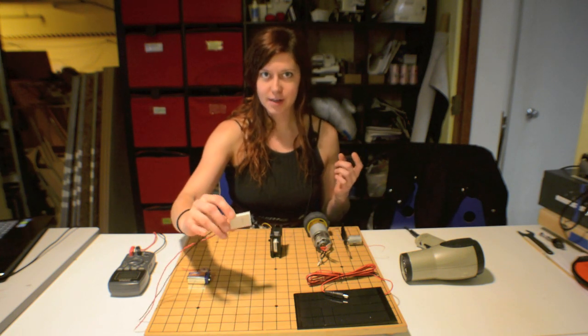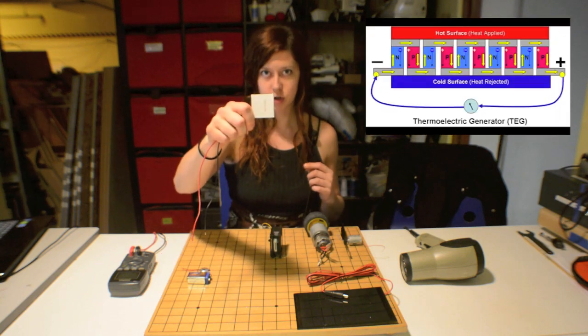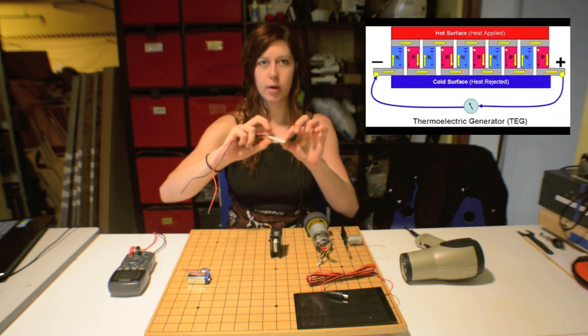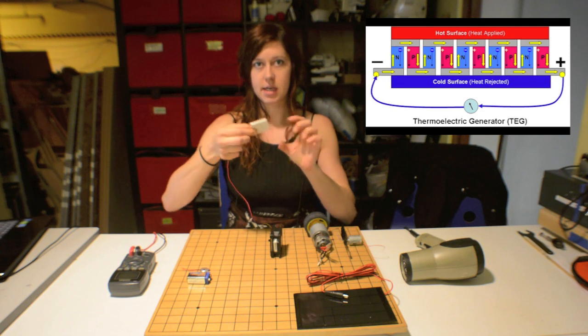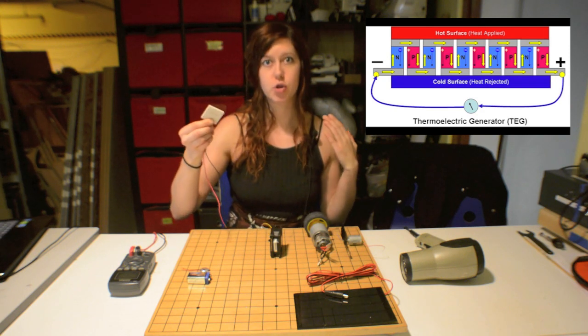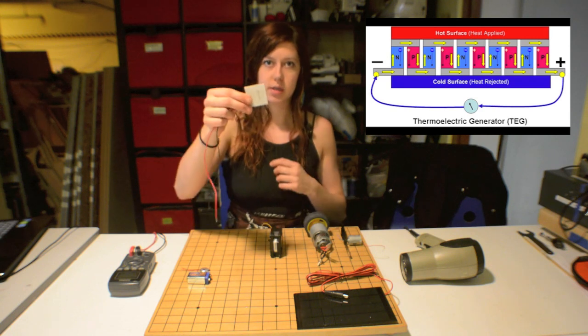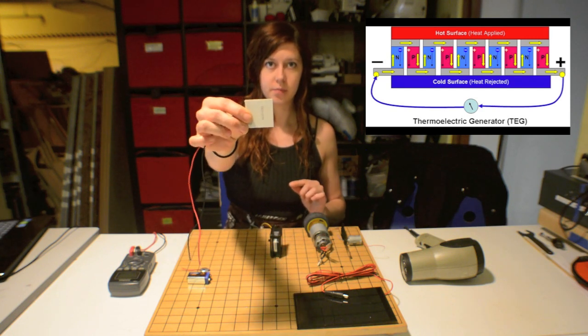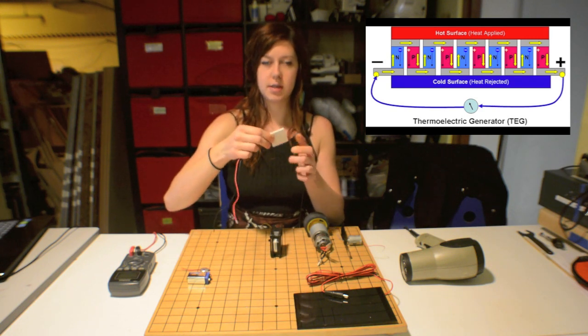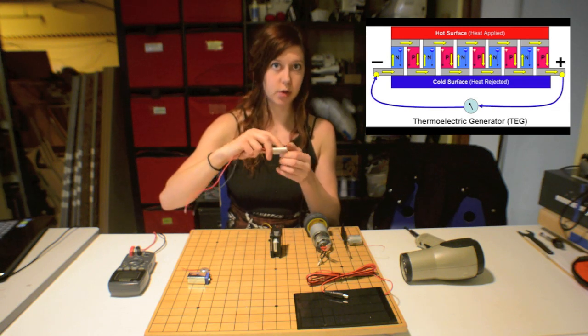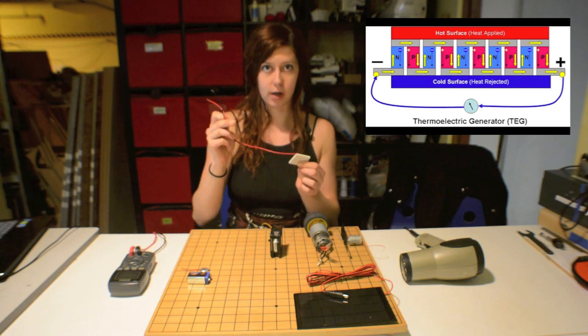One of my favorite ways is a thermoelectric generator, and what that does is it takes a temperature difference or temperature differential, and it produces a current from that. So this is a Peltier junction, and if you insulate one side and heat up the other side, you'll get a small current out the other end.